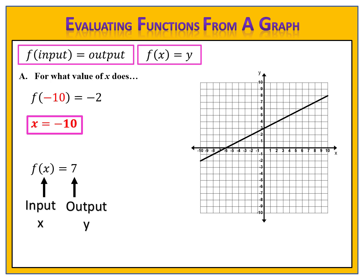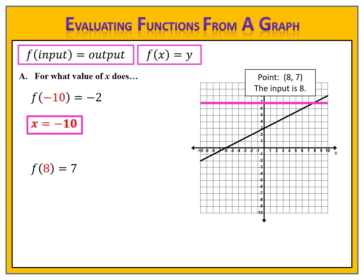For f of x equals 7: f of input equals output — we know the output is 7 but not the input. The output is 7, so we draw a line across the graph where the outputs are 7 and look for where the graph intersects that line. It's at the point (8, 7) — input 8, output 7. Therefore f of 8 equals 7, and since they asked us to state the value of x, x equals 8.